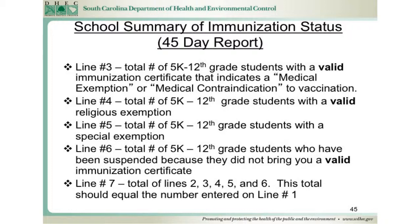On line number 5, enter the total number of 5K through 12th grade students with a special exemption. On line number 6, enter the total number of 5K through 12th grade students who have been suspended because they did not provide you with a valid immunization certificate. On line number 7, enter the sum total of lines 2, 3, 4, 5, and 6. This total should equal the total number of 5K through 12th grade students that you entered on line number 1.